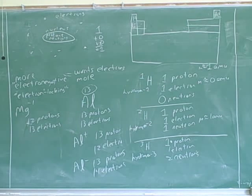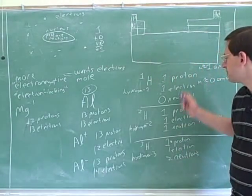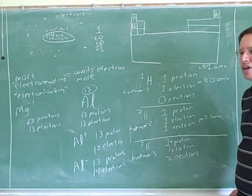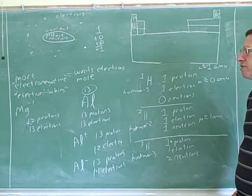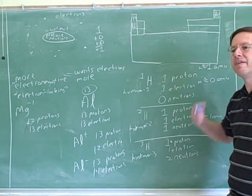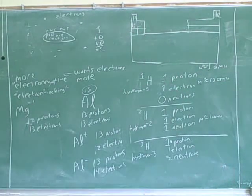Or 47.88? Well, the reason is that many of these elements exist in nature in many different isotopes, and what they're doing is averaging together the different isotopes to find what the average weight is.